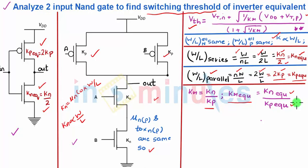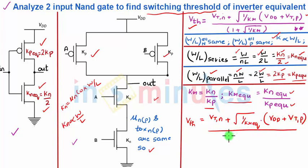So let's quickly do that. Switching threshold is equal to threshold voltage plus square root of 1 by Kr where Kr is Kr equivalent so let's just write that Kr equivalent into Vdd plus Vtp upon 1 plus square root of 1 by Kr equivalent.